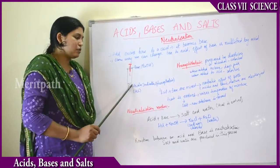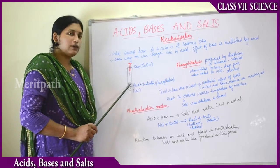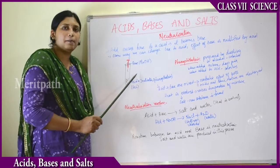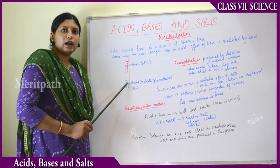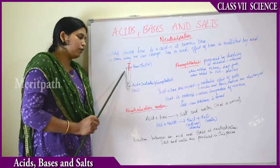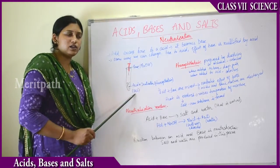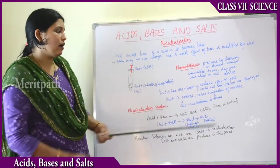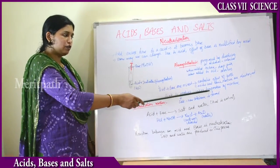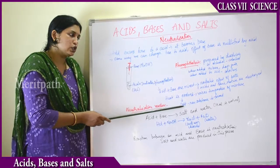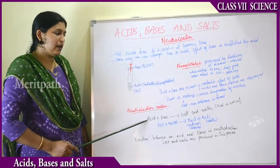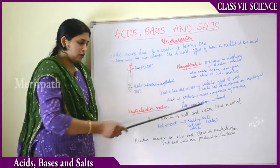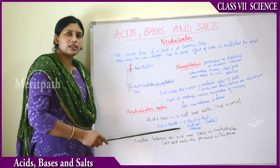When you mix an acid with a base, the nature of both is destroyed — the substance becomes neutral and releases salt along with water, and also some amount of heat. After mixing, the solution becomes a mixture of salt and water. The neutralization reaction can be written as: acid + base → salt + water + heat.